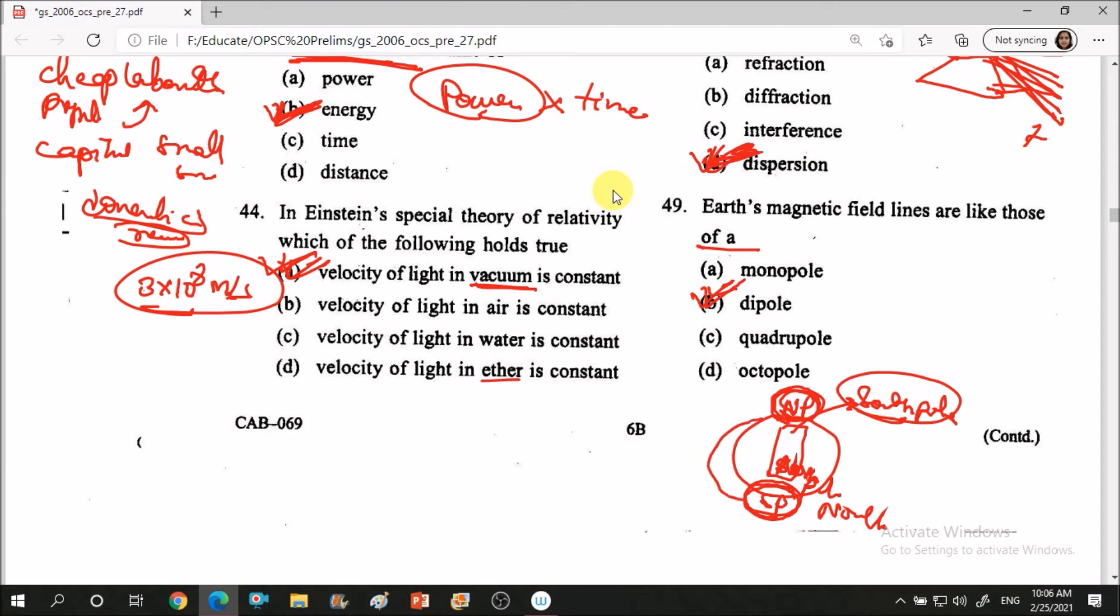Magnetic field is like this: north pole to south pole, like this the lines are there. Like a bar magnet. North pole to south pole, everywhere magnetic field. Magnetic field goes from north pole to south. So it acts just like a bar magnet, a bar magnet means dipole.